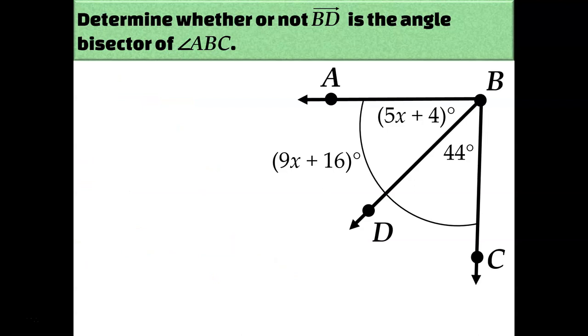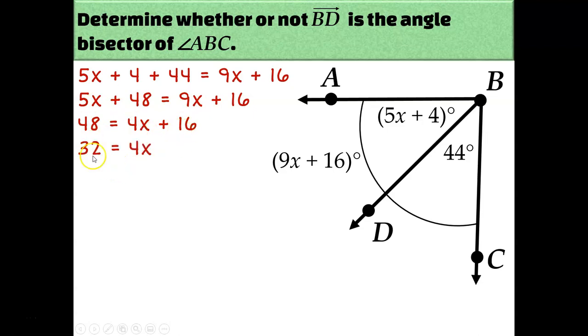Another way to show that BD is the angle bisector of angle ABC would be to set up 5x plus 4 plus 44 and set that equal to 9x plus 16. So basically we're using the angle addition postulate. Our goal in the end is going to be the same, that once we know x, we're going to plug it in and see if I get 44 and 44. So let's go ahead and solve this equation. I've got a couple of like terms I can combine. 4 and 44 is 48. Then I can subtract 5x from 9x to get 4x. Then I'll subtract 16 from 48 to get 32. And I'll divide both sides by 4 to get 8.